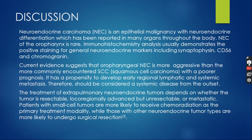Discussion: Neuroendocrine carcinoma is an epithelial malignancy with neuroendocrine differentiation which has been reported in many organs throughout the body. NEC of the oropharynx is rare. Immunohistochemistry analyses usually demonstrate positive staining for general neuroendocrine markers including synaptophysin, CD56, and chromogranin. Current evidence suggests that oropharyngeal neuroendocrine cancer is more aggressive than the more commonly encountered squamous cell carcinoma, with a poorer prognosis. It has a propensity to develop early regional lymphatic and systemic metastasis, and therefore should be considered a systemic disease from the outset. The treatment of extrapulmonary neuroendocrine tumour depends on whether the tumour is resectable, loco-regionally advanced but unresectable, or metastatic. Patients with small cell tumours are more likely to receive chemoradiation as the primary treatment modality, while those with other neuroendocrine tumour types are more likely to undergo surgical resection.